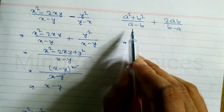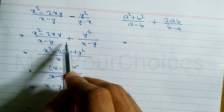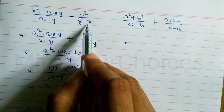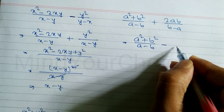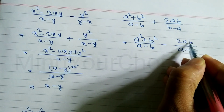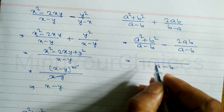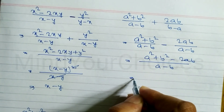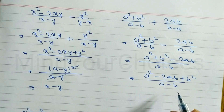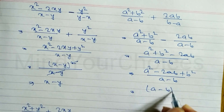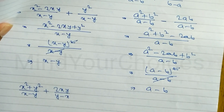Again here one denominator is (a-b) and the other is (b-a) — same situation as before. We change the sign: in place of plus write minus, interchange to make (a-b). So we write a²+b² over (a-b), change plus to minus, and interchange to (a-b) with 2ab. LCM is (a-b) and numerator becomes a²+b²-2ab. Arranging: a²-2ab+b² over (a-b) — this is the formula (a-b)². So (a-b)² divided by (a-b), the (a-b) cancels and the answer is (a-b).